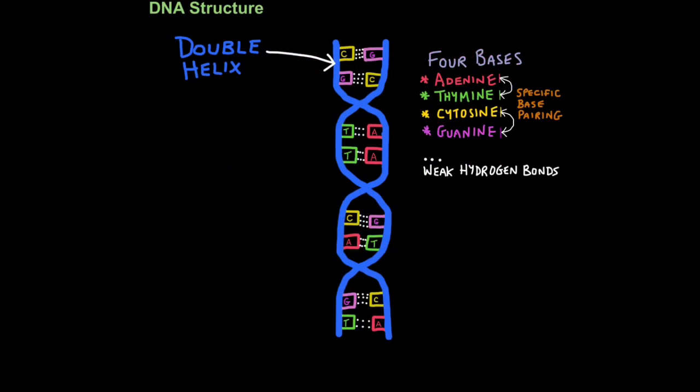So if you're ever asked to describe DNA structure for, say, three marks, you would say the following. DNA has a double helix structure. It contains four bases, A, T, C, and G, which are held together by weak hydrogen bonds. And then finally, you could say, and base pairing is specific. A always pairs with T, and C always pairs with G.